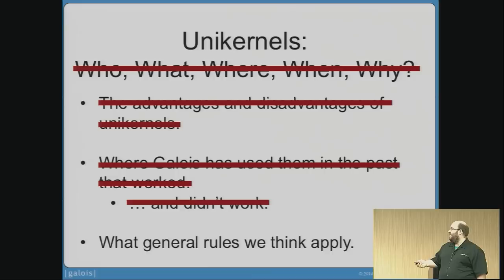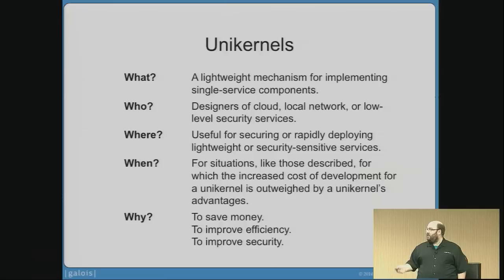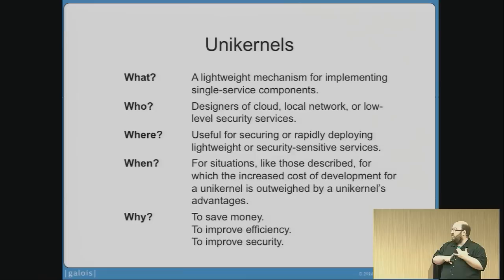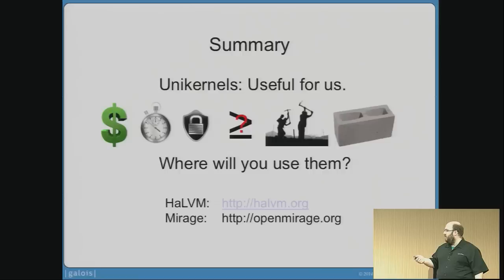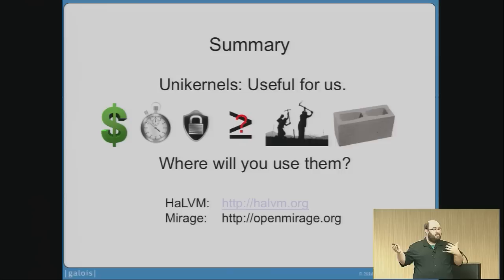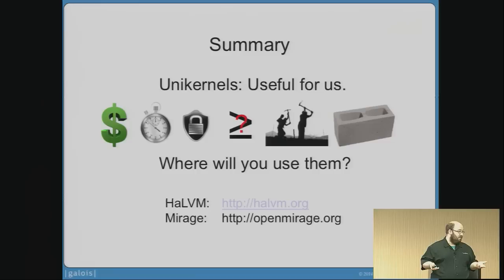So that's all I had about what we did. In summary: unikernels — what are they? A lightweight mechanism for implementing single-service components. Who wants them? They're particularly useful in cloud, local network sensors, local network security, and low-level security services on a server or laptop. Where are they useful? For securing or rapidly deploying lightweight services. When are they useful? In the various situations I've gone over. And why? To save money, to improve efficiency, or — from my company's point of view — the biggest thing is to improve the security of the system as a whole. So there's an equation: take the advantages of unikernels, take the disadvantages, and explore whether it works for your project.